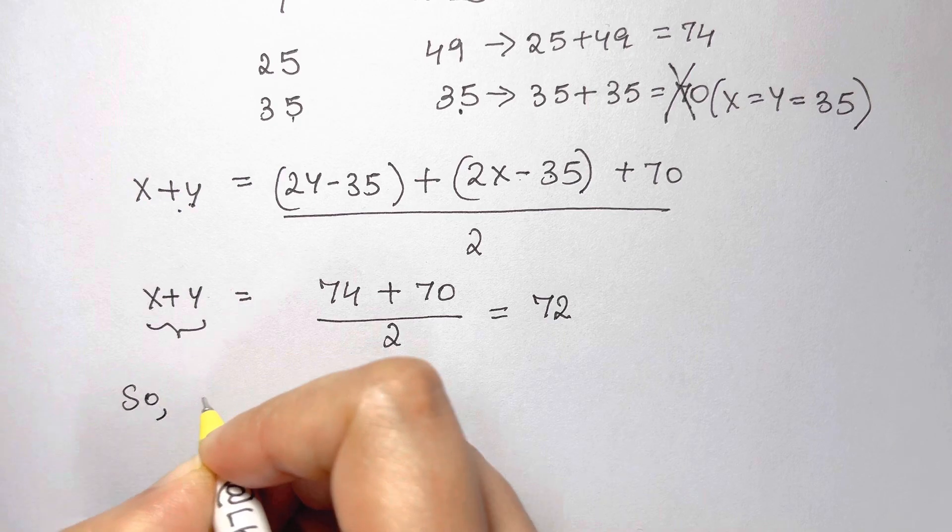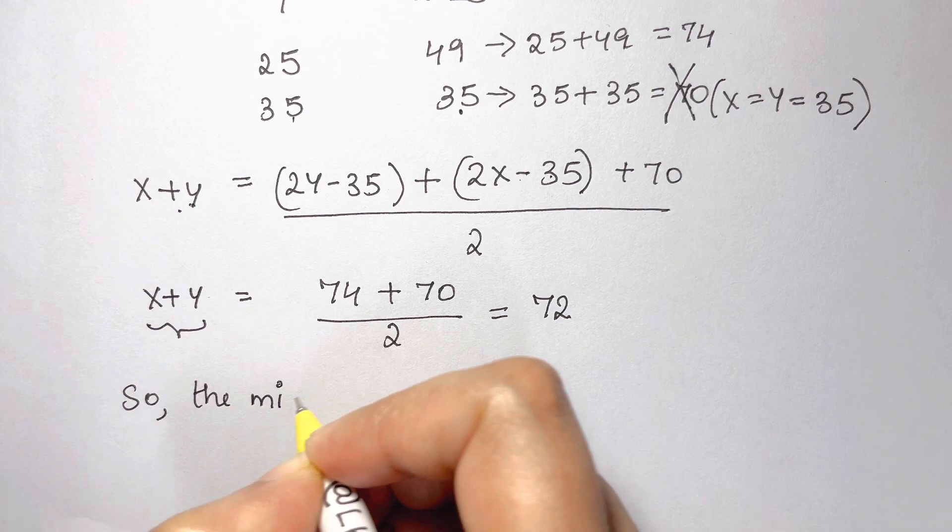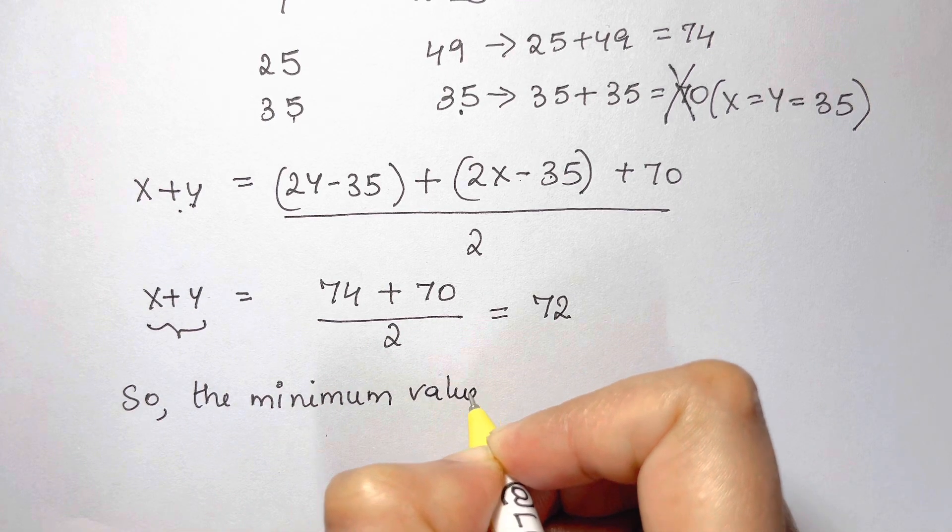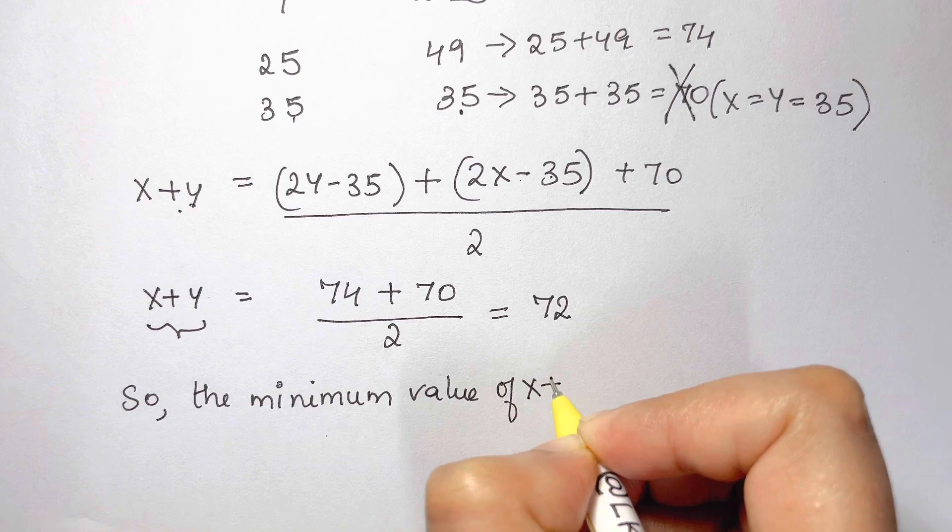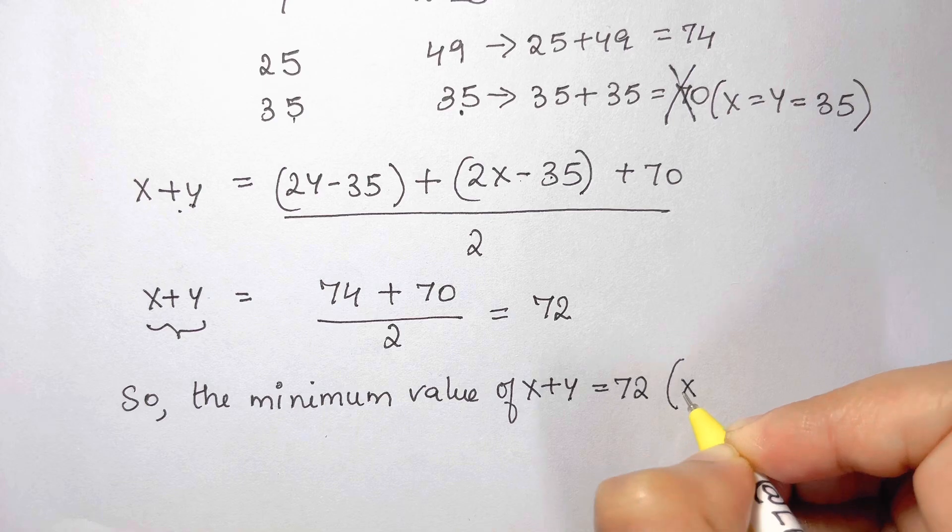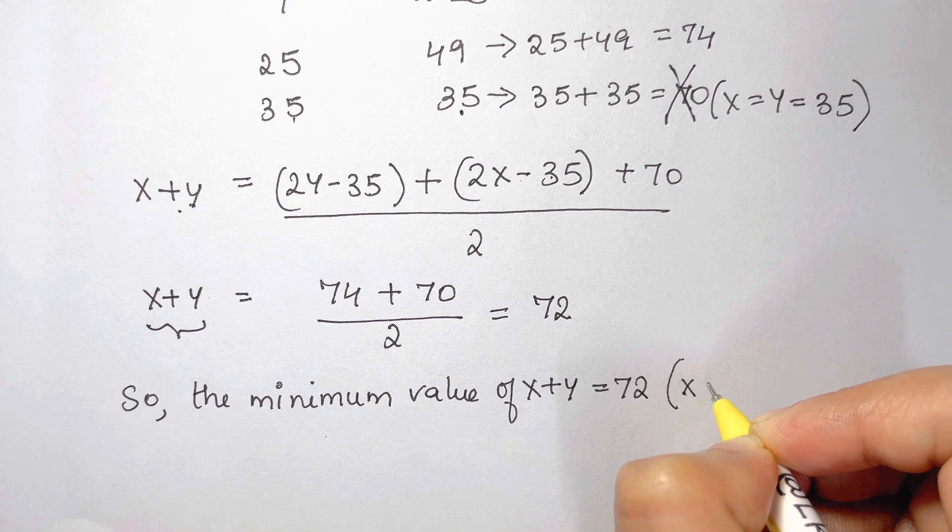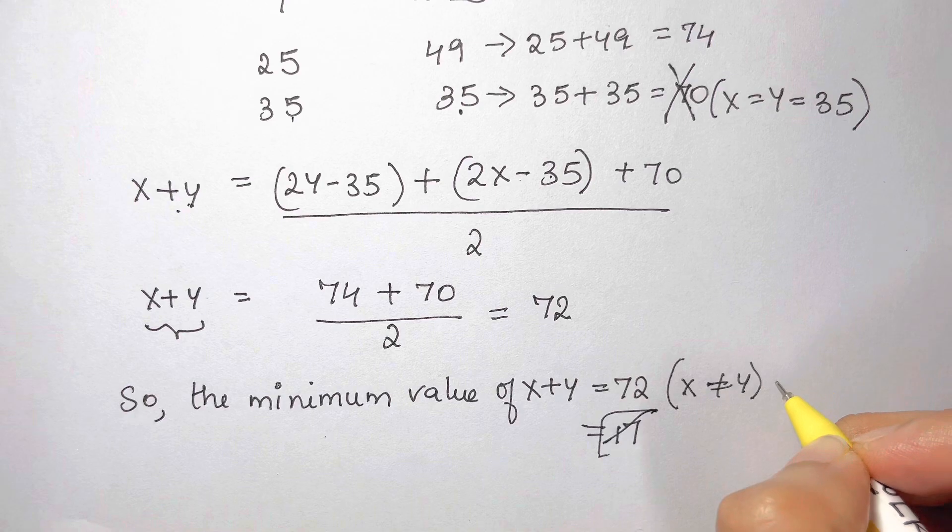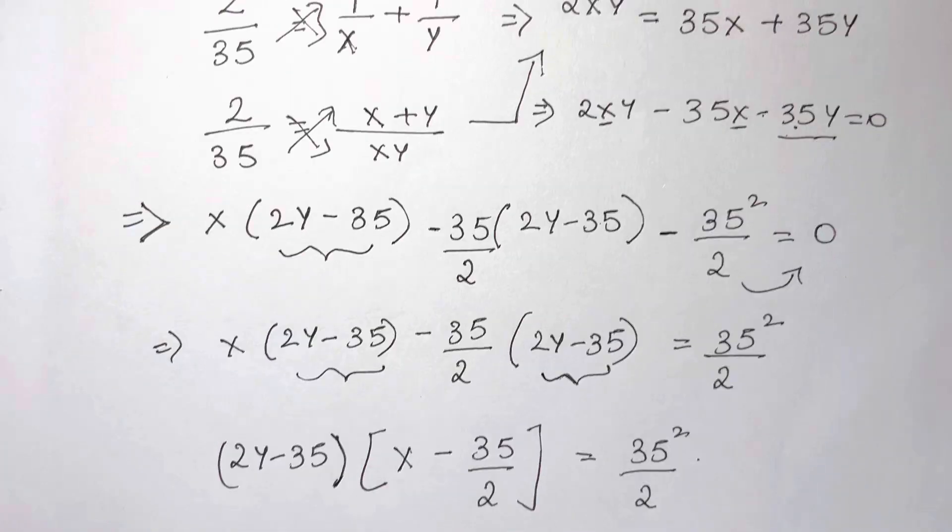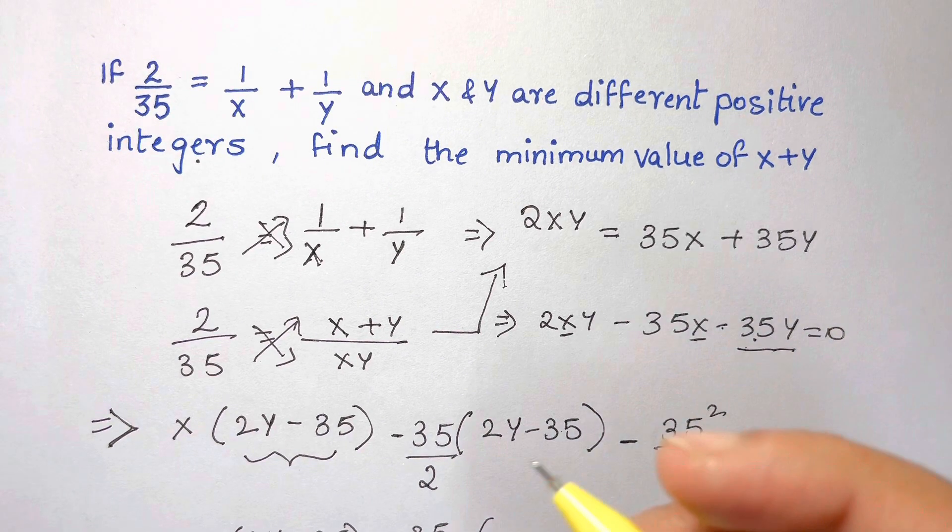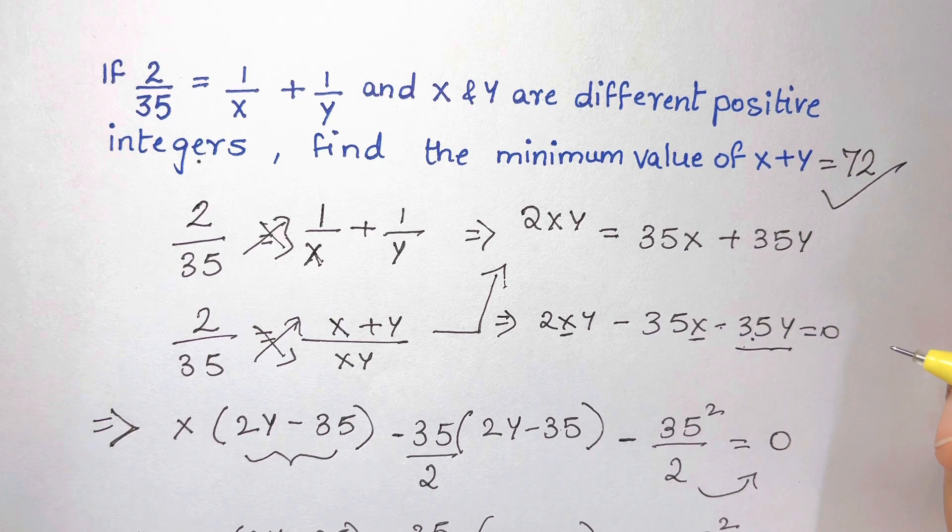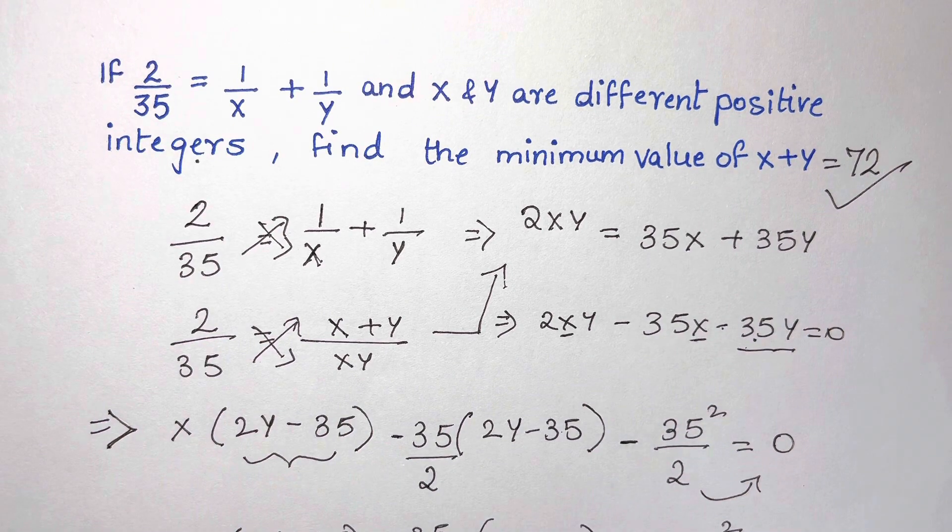So the minimum value is equal to 72. So the minimum value of x plus y is equal to 72 condition that x is not equal to y. So 72 is your required answer. Thanks for watching. Bye-bye.